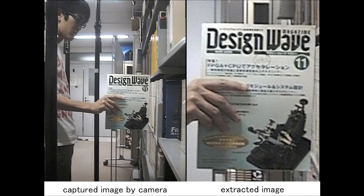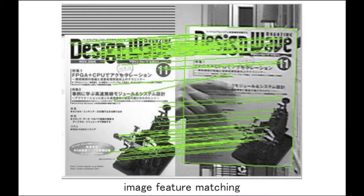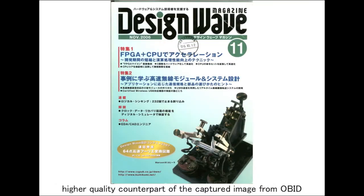The quality of the extracted image is low in general. Therefore, the system searches for a higher quality image from an online book information database. The search is performed based on image feature matching.